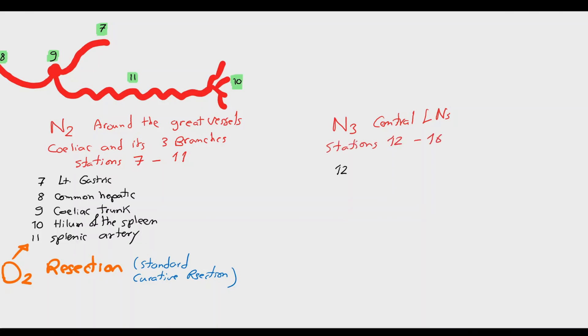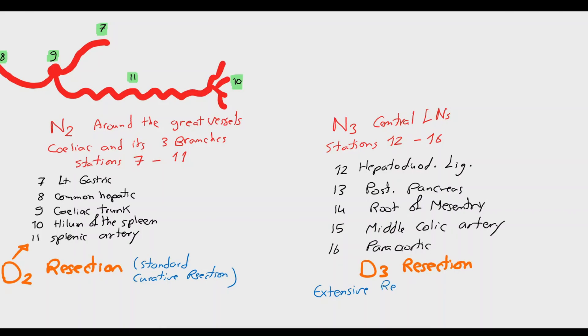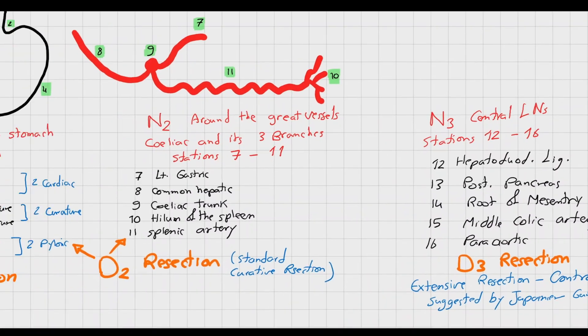A third tier of lymph nodes is also identified, stations 12 to 16: hepatoduodenal ligament lymph nodes, posterior pancreatic lymph nodes, root of mesentery, middle colic artery, and para-aortic lymph nodes. Resection of these along with the first two tiers is D3 resection. This extensive resection is highly controversial, advocated by Japanese surgeons but not yet adopted in Western countries.